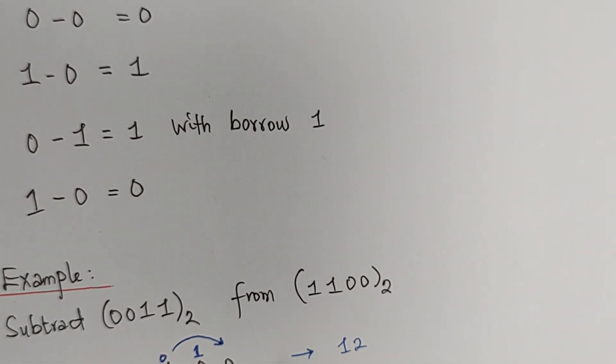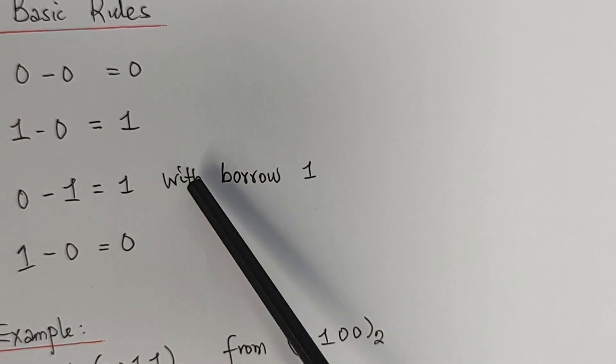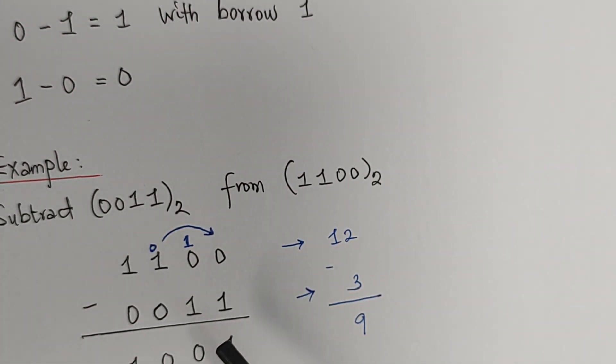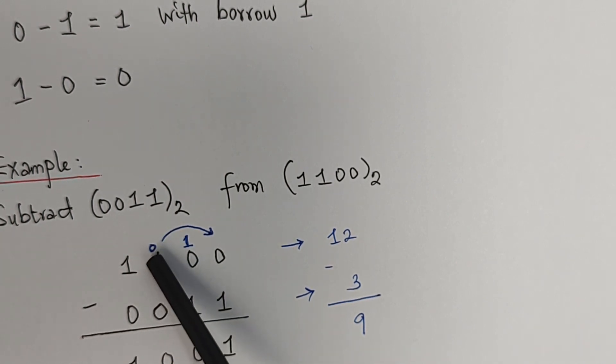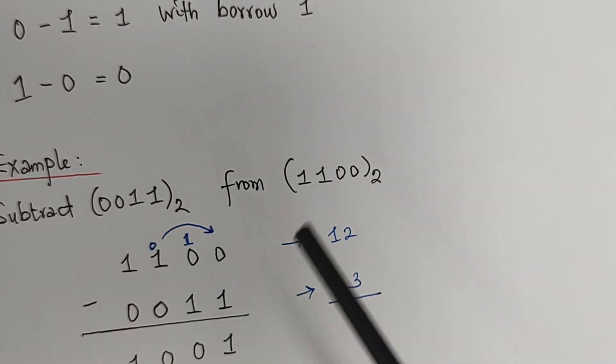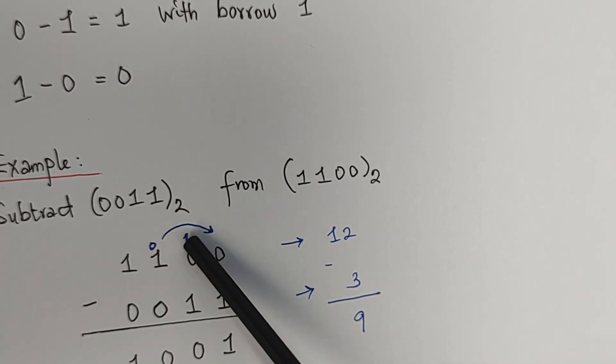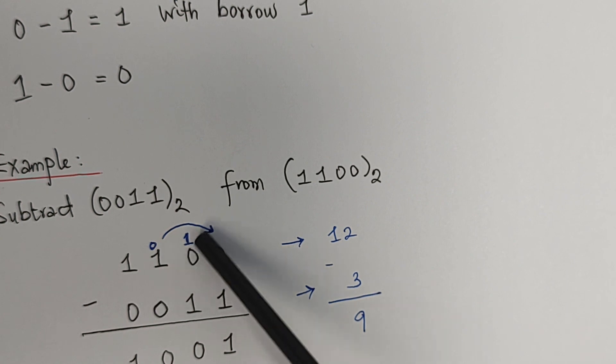Now, for 0 minus 1, it's going to be 1 with borrow 1. So we have to locate where we can borrow 1 from. At this point, we cannot take 1, so we'll take 1 here. When we take 1 here, it's going to be 0 because 1 minus 1 will be 0. So we'll move over. 1 minus 1 will now be 1 with borrow 1.